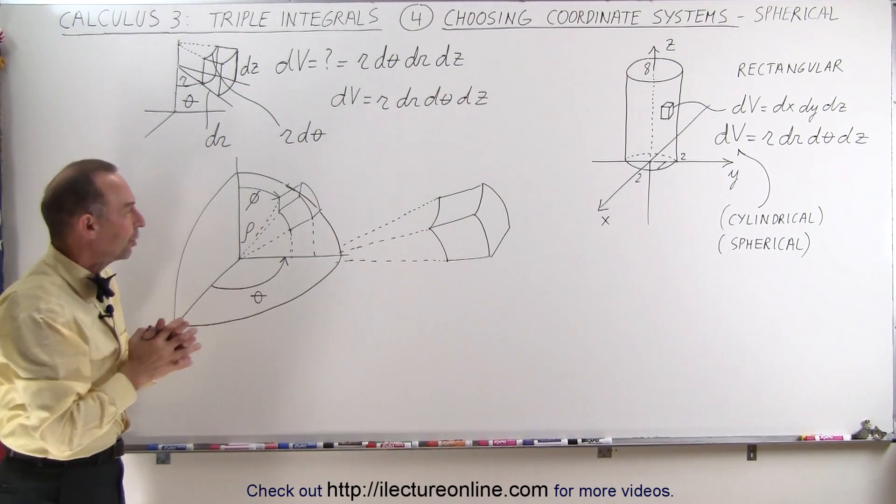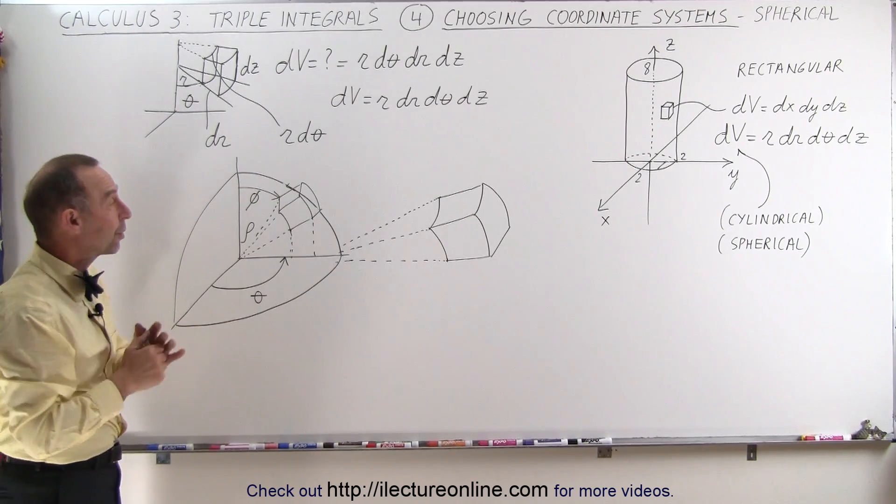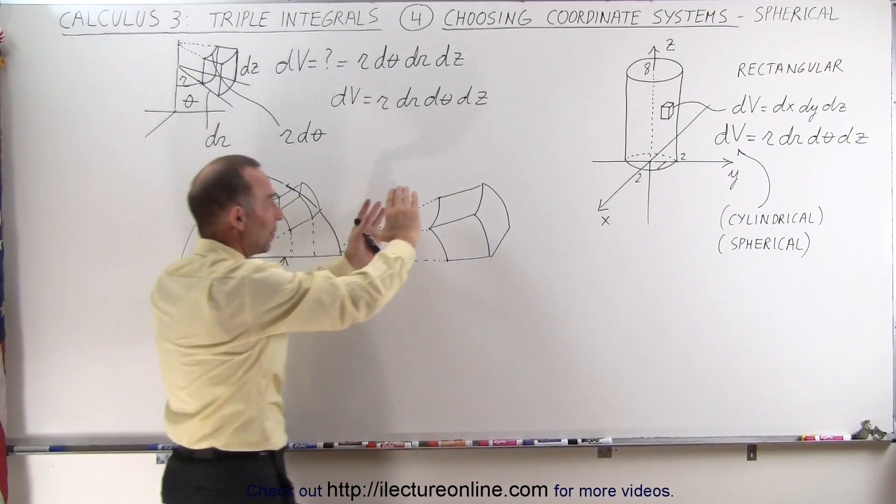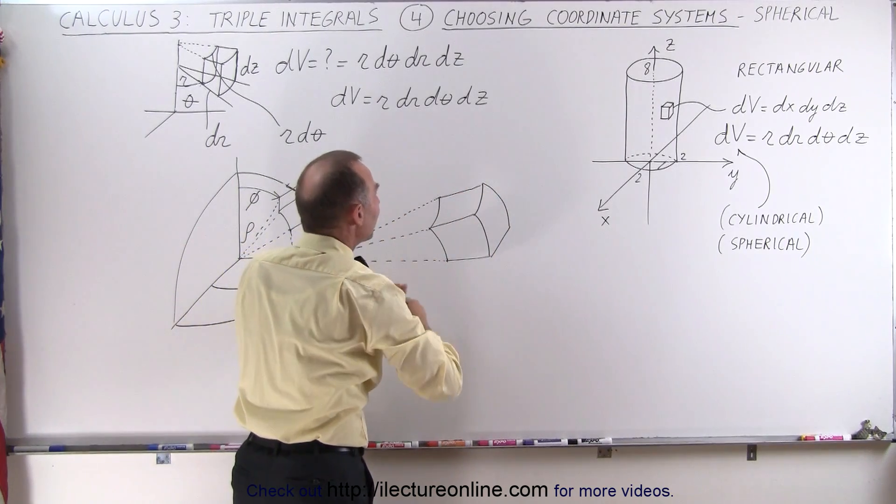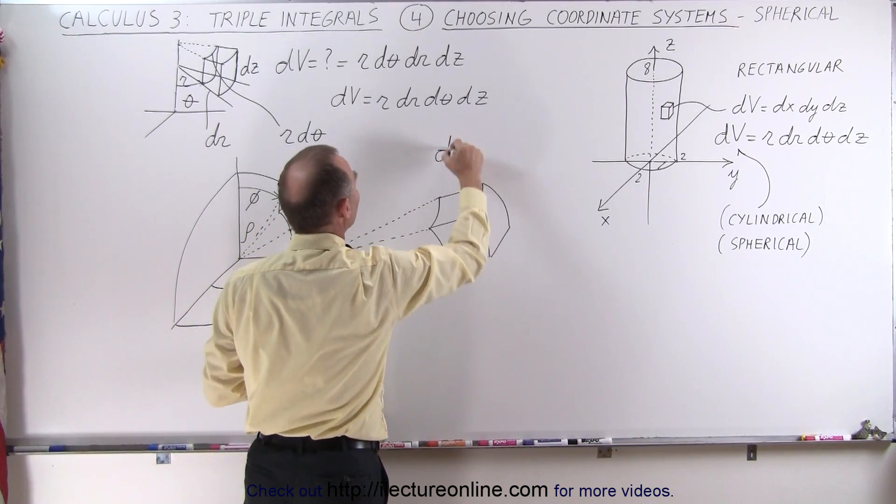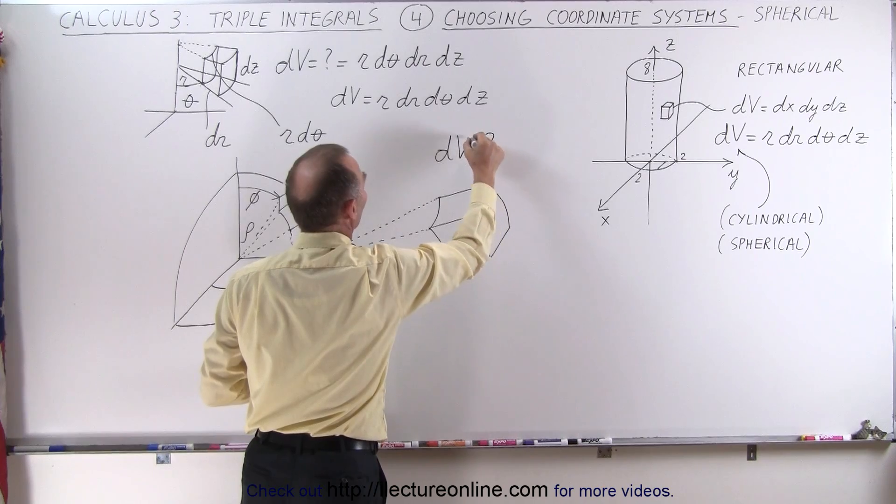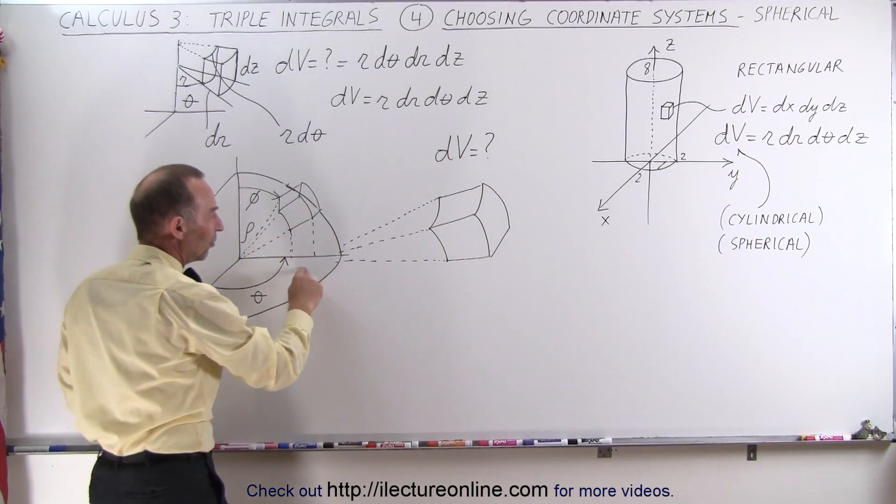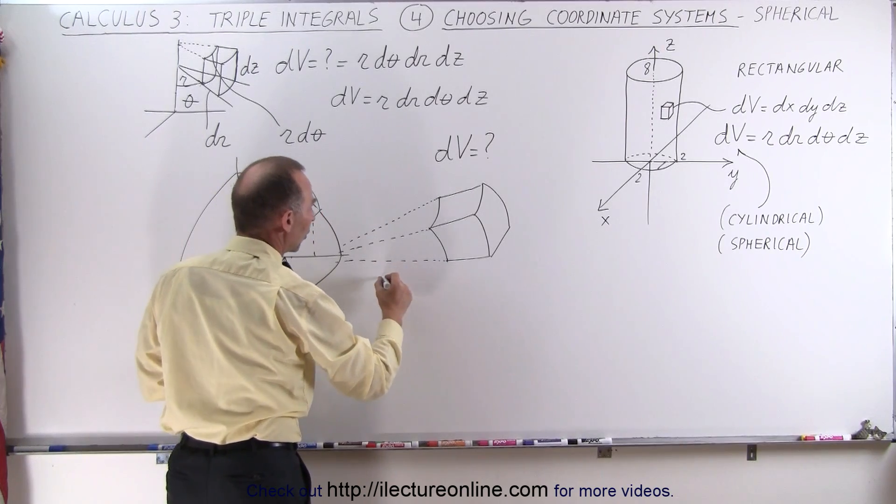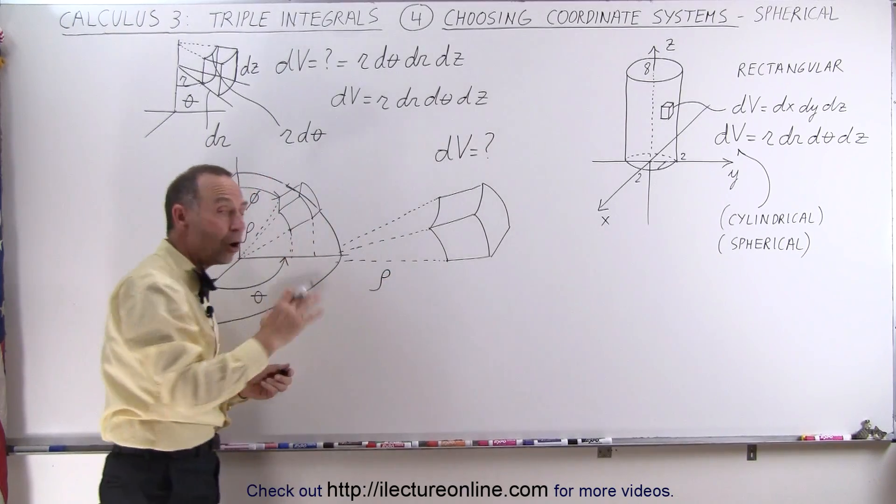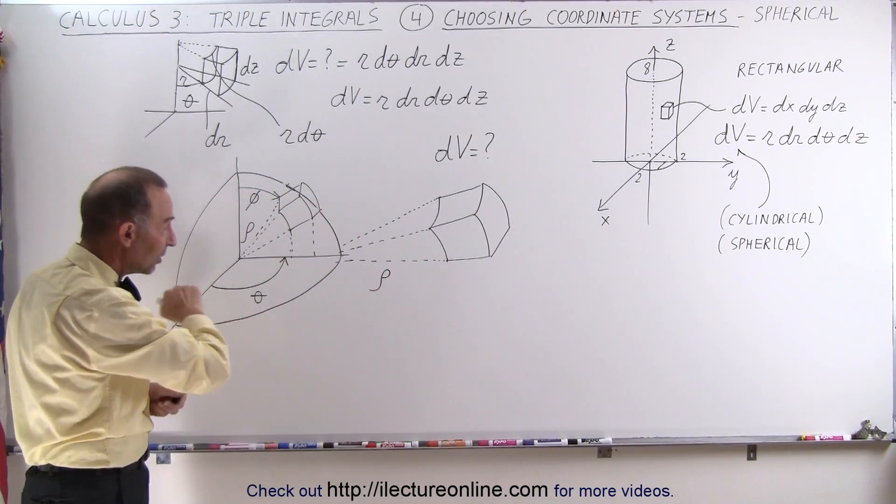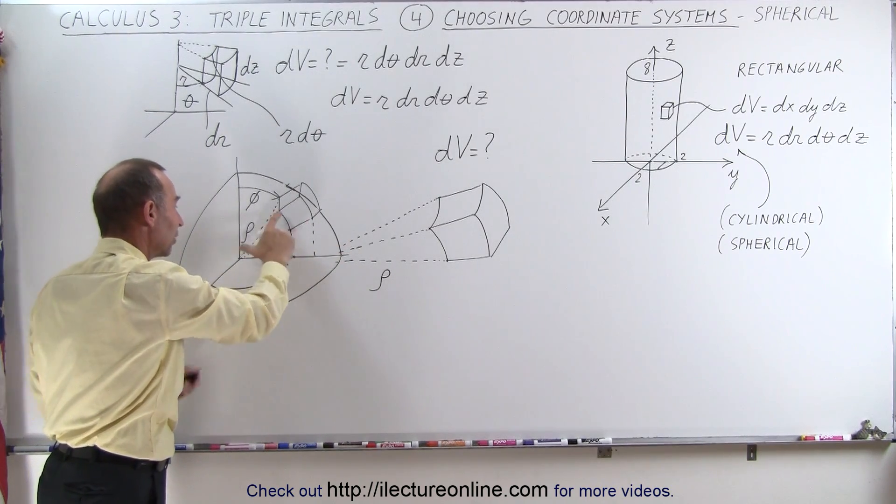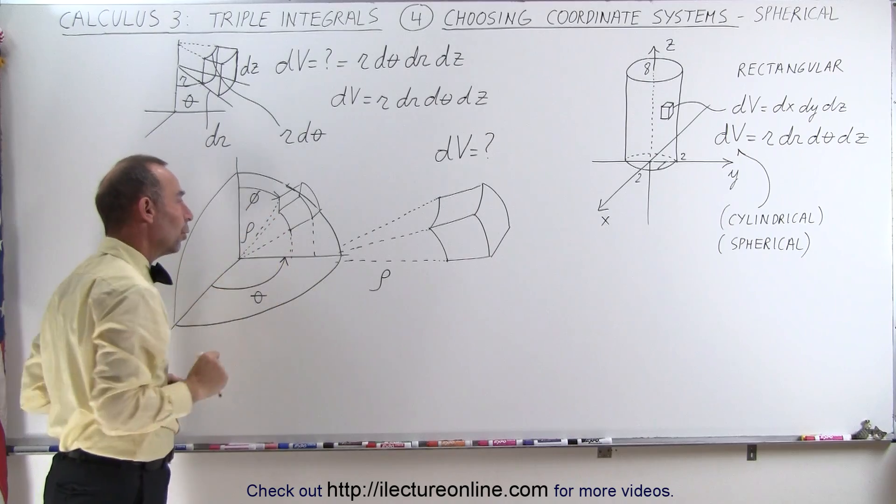But what about spherical coordinates? Well it's even a little bit more complicated. Again it's actually quite hard to draw but assume that we have a spherical dv and what is that dv equal? And that's always difficult to figure out. Well first of all the distance to the volume element we're going to call that rho. Instead of using r we call it rho. It's the distance from the center of the circle out to wherever your volume element is. So this distance here is rho.